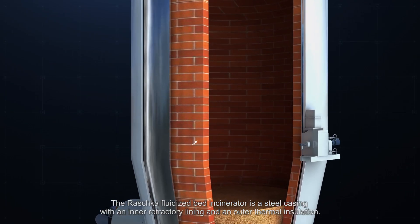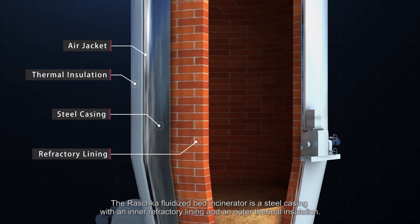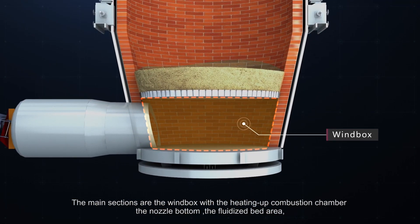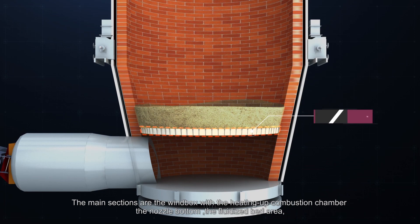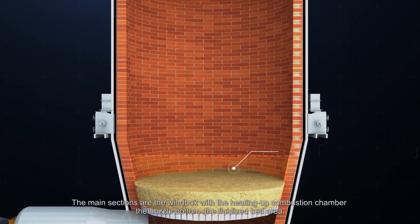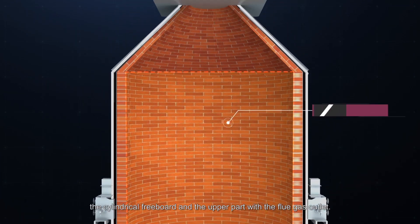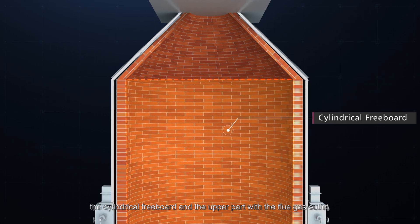The Raschke fluidized bed incinerator is a steel casing with an inner refractory lining and an outer thermal insulation. The main sections are the windbox with the heating up combustion chamber, the nozzle bottom, the fluidized bed area, the cylindrical freeboard and the upper part with the flue gas outlet.